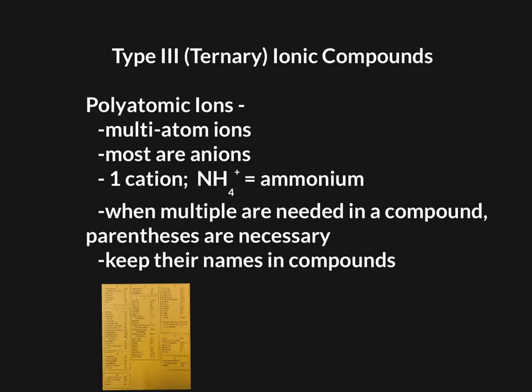Most of them are anions, meaning they're negatively charged. There is one cation polyatomic ion called ammonium. You want to make sure that you remember that because you don't see it all the time. When there are multiple polyatomic ions required in a compound, you have to put them inside parentheses, and we'll see that tonight.